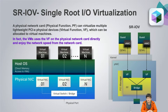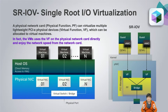SR-IOV stands for Single Root I/O Virtualization. The SR-IOV feature can fix this issue. A physical network card, named the Physical Function (PF), can virtualize multiple lightweight PCIe physical devices, named Virtual Functions (VFs), which can be allocated to VMs. So every VF can be assigned to a VM, and your VM service can enjoy the network card speed directly.